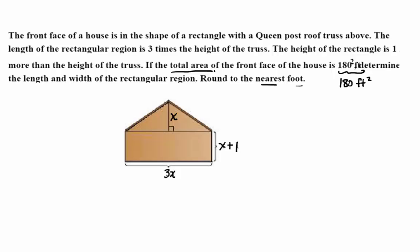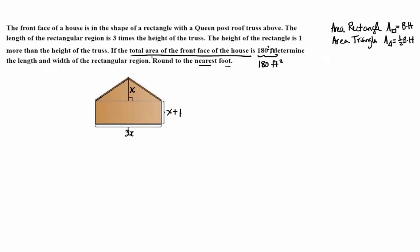The total area of the front face of the house. There's not going to be a formula for that, right? To get the total area of the front face of the house, we're going to have to add the area of the triangle plus the area of the rectangle. Let's come up with an expression in terms of x that represents the area of the triangle.